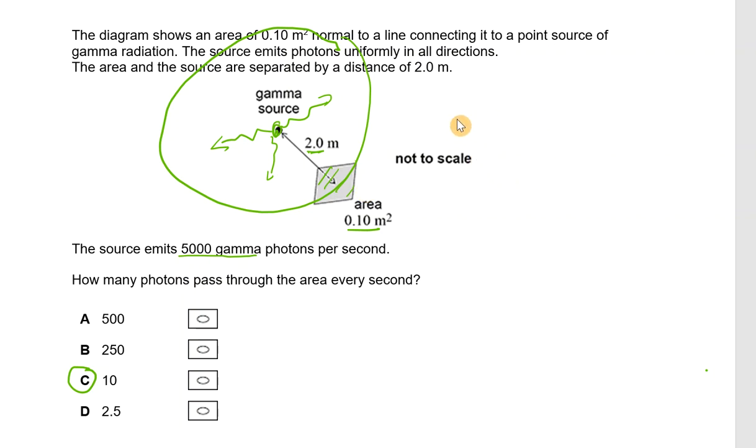So let's do that together now. The area of a sphere, again this is all on your data sheet, is 4πr². So the area of that sphere is 4 multiplied by π, the radius is 2 metres, 2 squared, so the area is 16π metres squared.